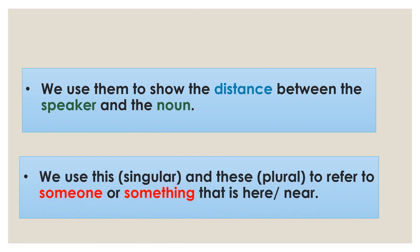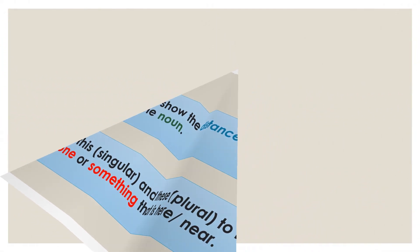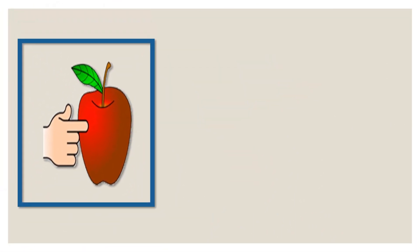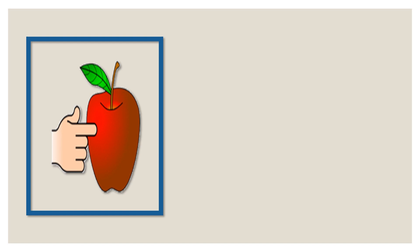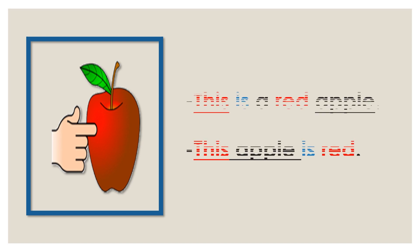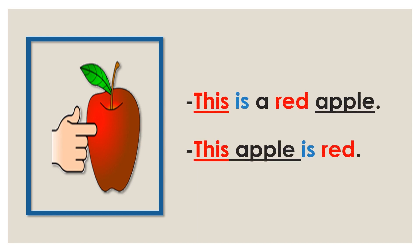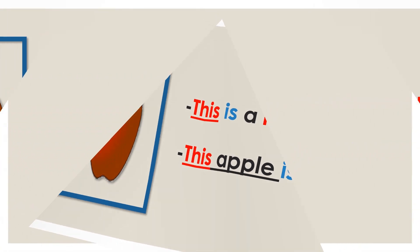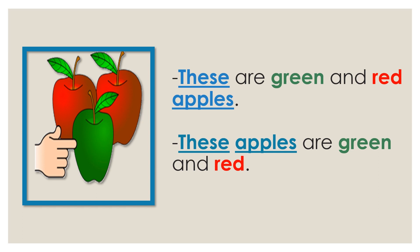We use 'this,' which is singular, and 'these,' which is plural, to refer to someone or something that is near. In this picture I have one apple and it's near, so I can say 'This is a red apple' or 'This apple is red.' In the next picture I have many apples and they are near, so I can say 'These are green and red apples' or 'These apples are green and red.'